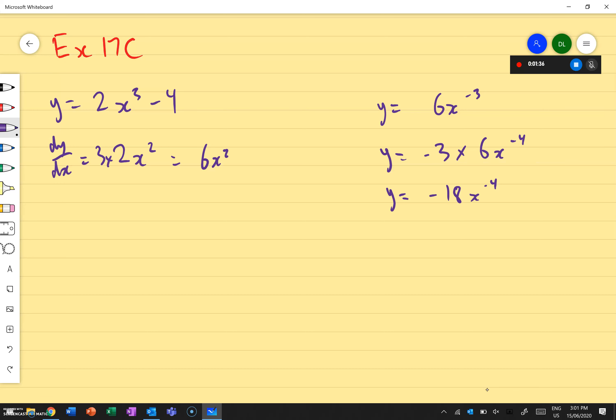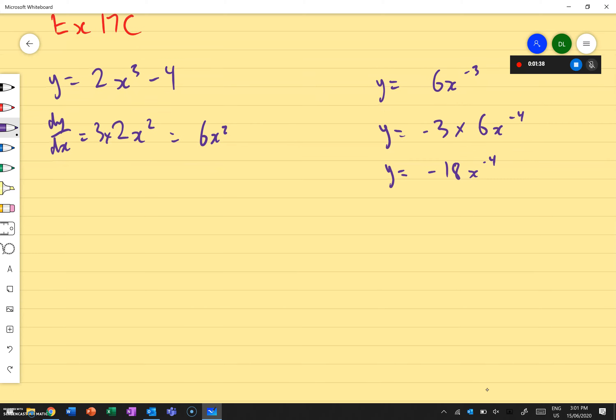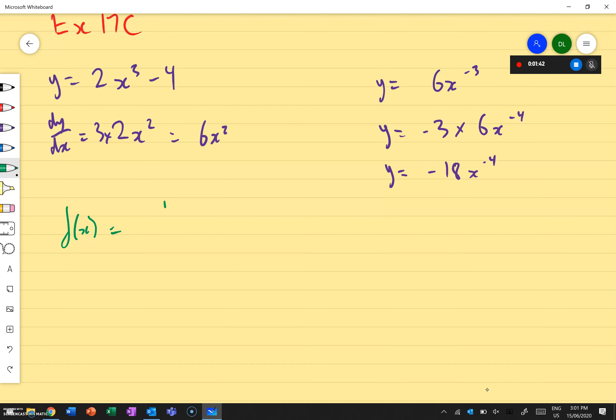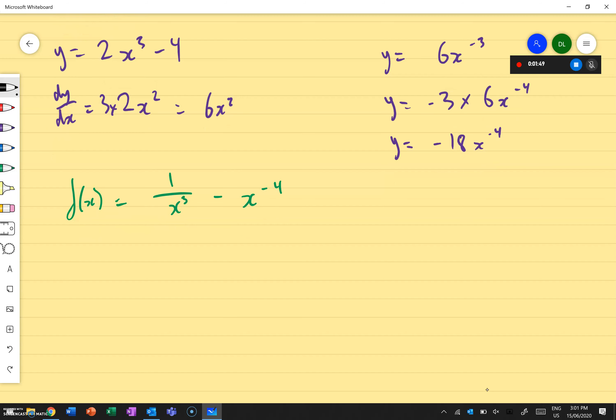Here's where we need to actually apply our understanding of our index laws. If I have an equation f of x equals 1 over x to the power of 3 minus x to the power of negative 4, I need to know that 1 over x to the power of 3 is the same as x to the power of negative 3. You guys remember that from your index laws? Yeah. So that equals to x to the power of negative 3 minus x to the power of negative 4.